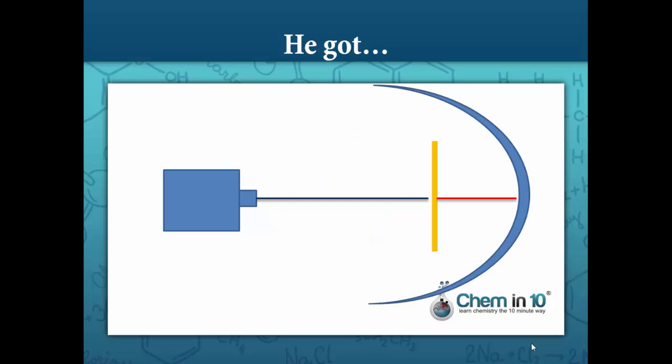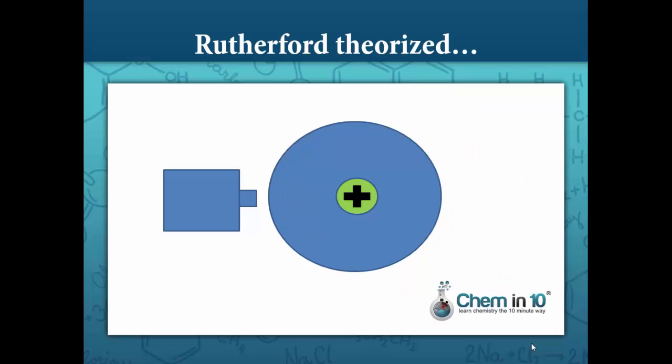What he got was that some of these alpha particles did go through and hit the zinc sulfide screen. Some were deflected, some were deflected more than others, and on occasion he would actually get an alpha particle that shot right back at the source. He's noted for saying that it was like shooting bullets at a piece of tissue paper, and the bullet would shoot right back at you.